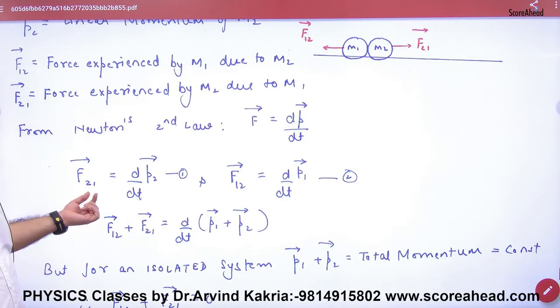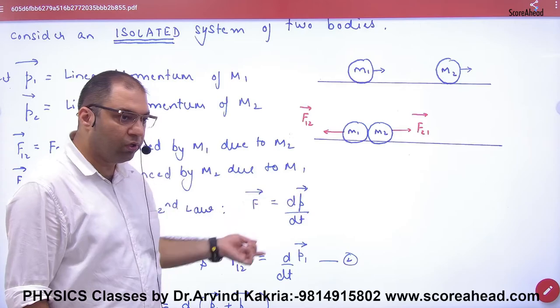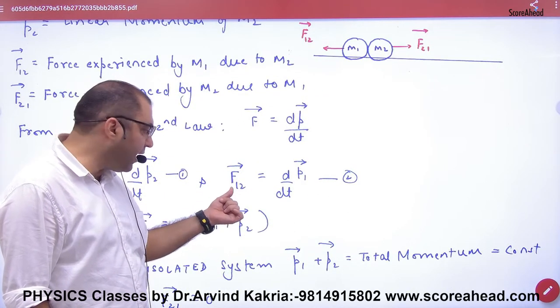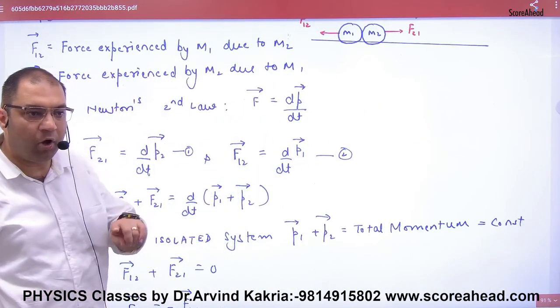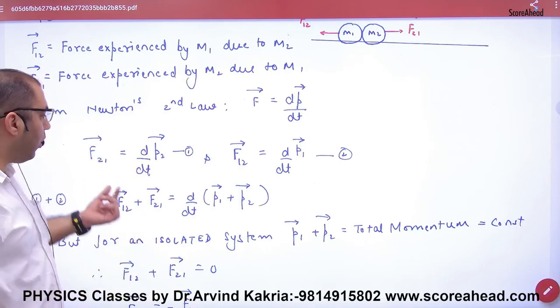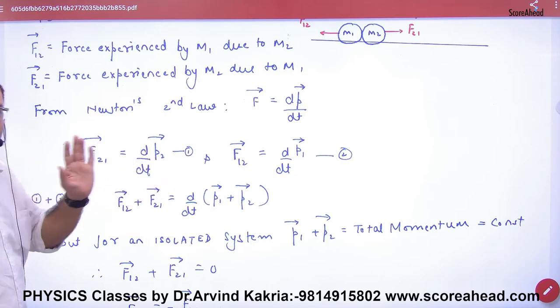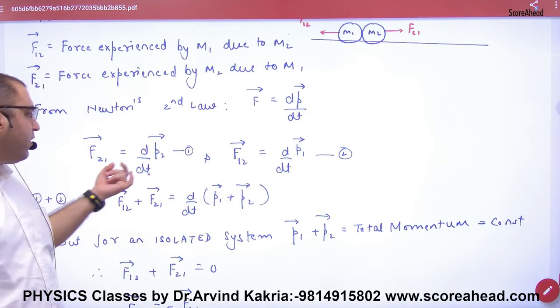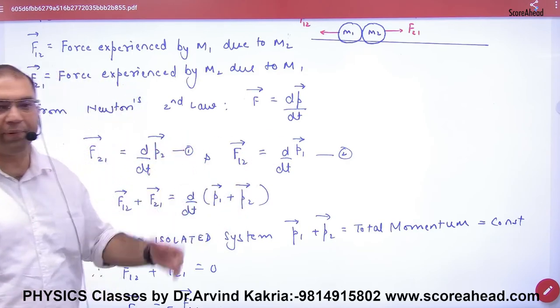Now Newton's second law says force is dp by dt. So for first ball, for the first ball, the force is F1,2. So 1,2 means first ball. This is one number means first ball's force. This first ball's force is d by dt of what? P1 vector, first ball's momentum. For second ball, F2,1 vector, second ball here, what will be P2 vector. Clear? So Newton's law laid out for both balls. Add two equations, then what will be F2,1 vector plus F1,2 vector, d by dt common, then what will be P1 vector plus P2 vector.